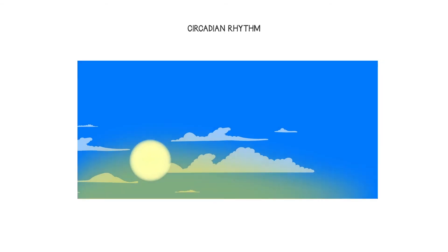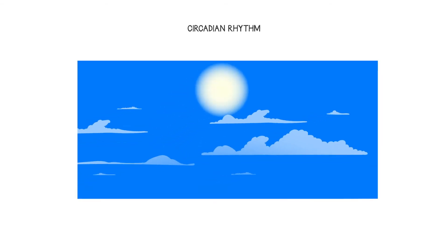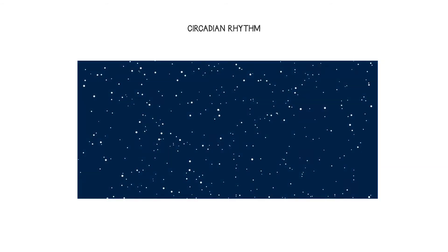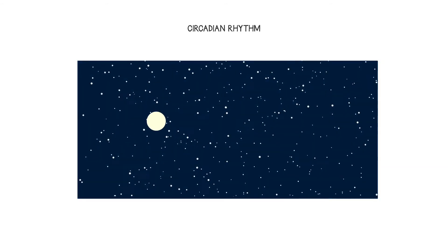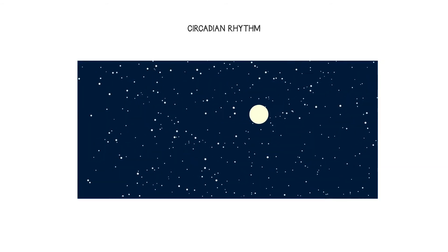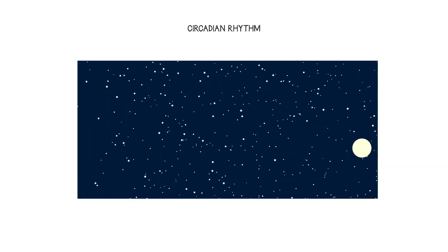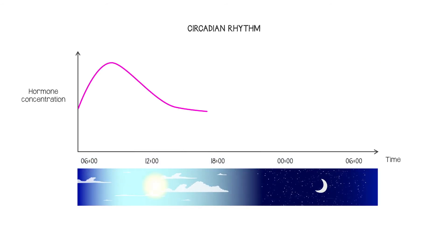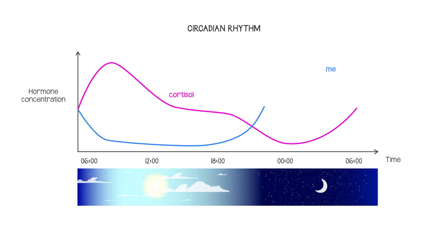Almost all hormones are secreted with a certain circadian rhythm. This means that levels are higher or lower at different times of the day, the exact pattern being characteristic of a particular hormone. One hormone might be at its highest level in the early morning, another just after you've gone to bed.